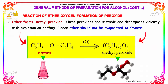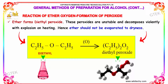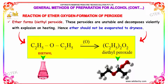Ether forms diethyl peroxide. These peroxides are unstable and decompose violently with explosion on heating. Hence, ether should not be evaporated to dryness. In the following reaction, diethyl ether in the presence of atomic oxygen results in the formation of diethyl peroxide.